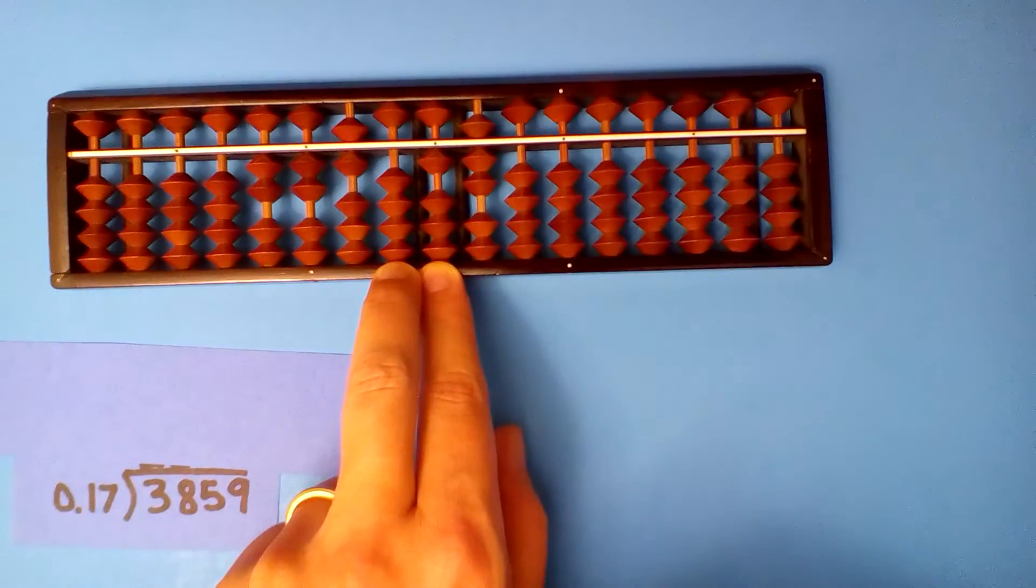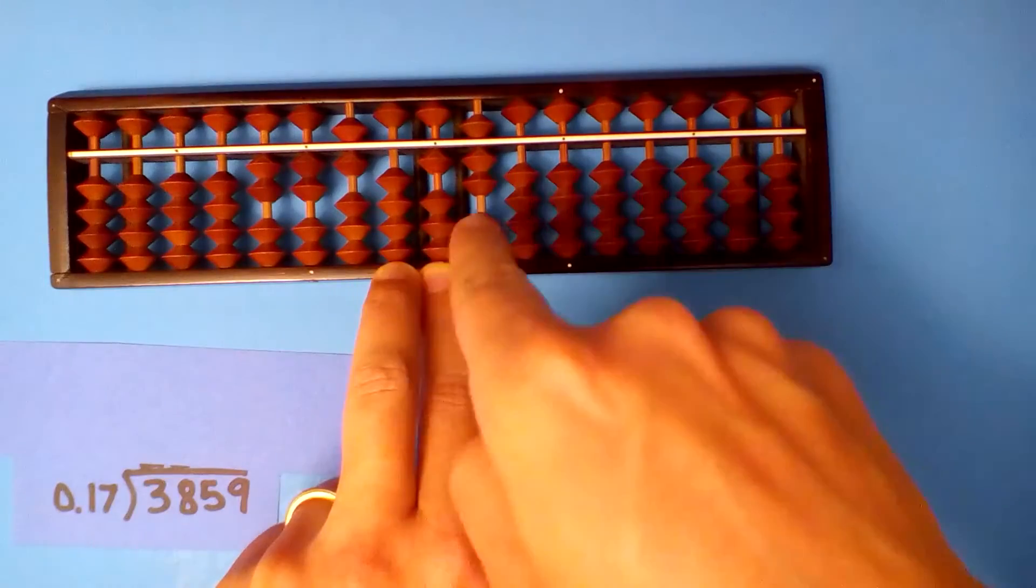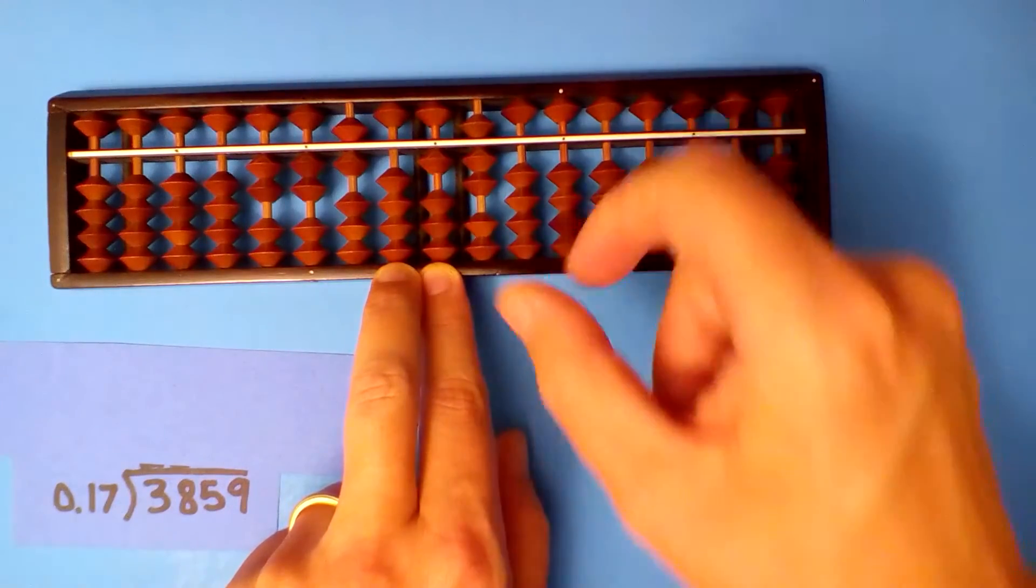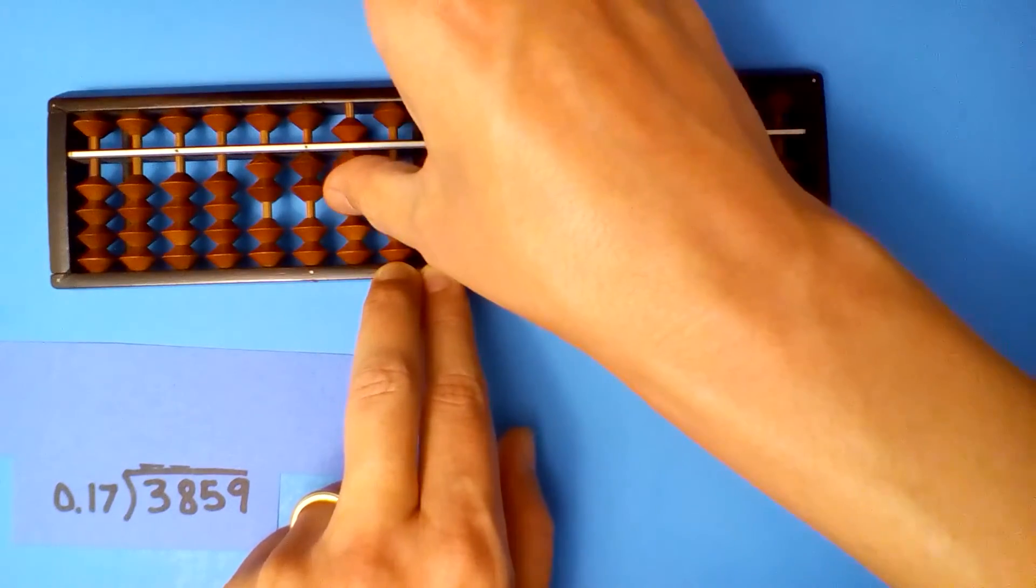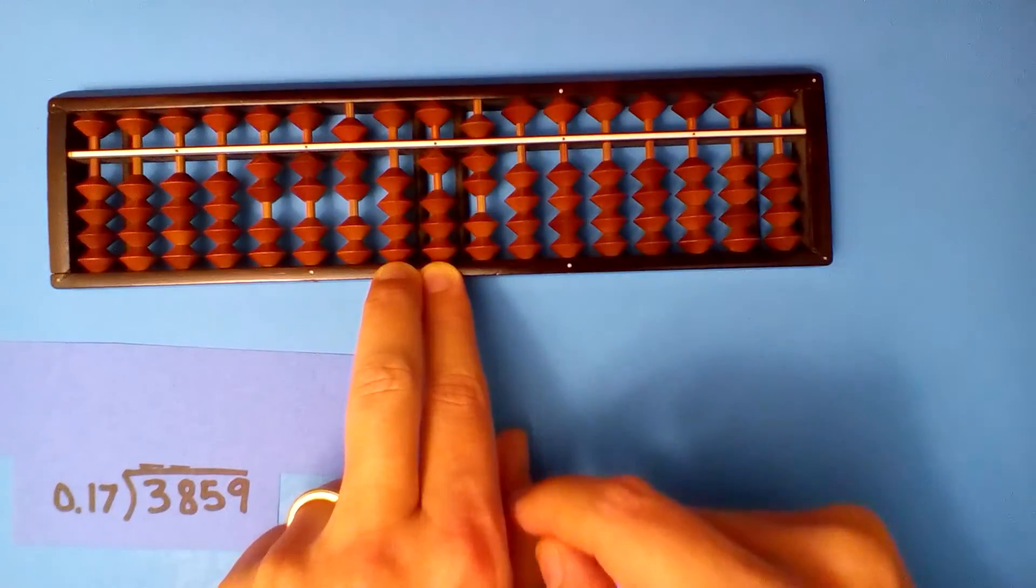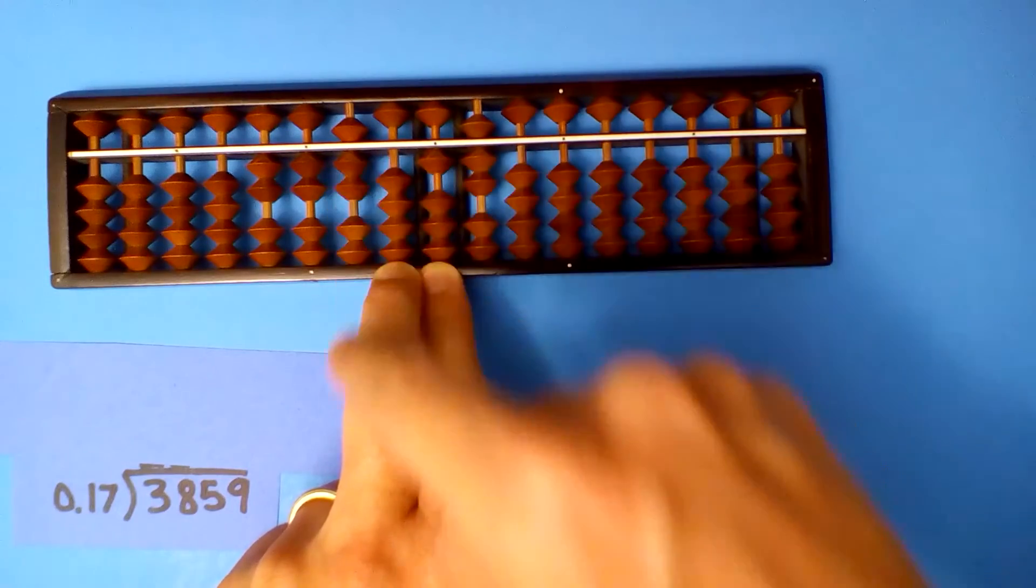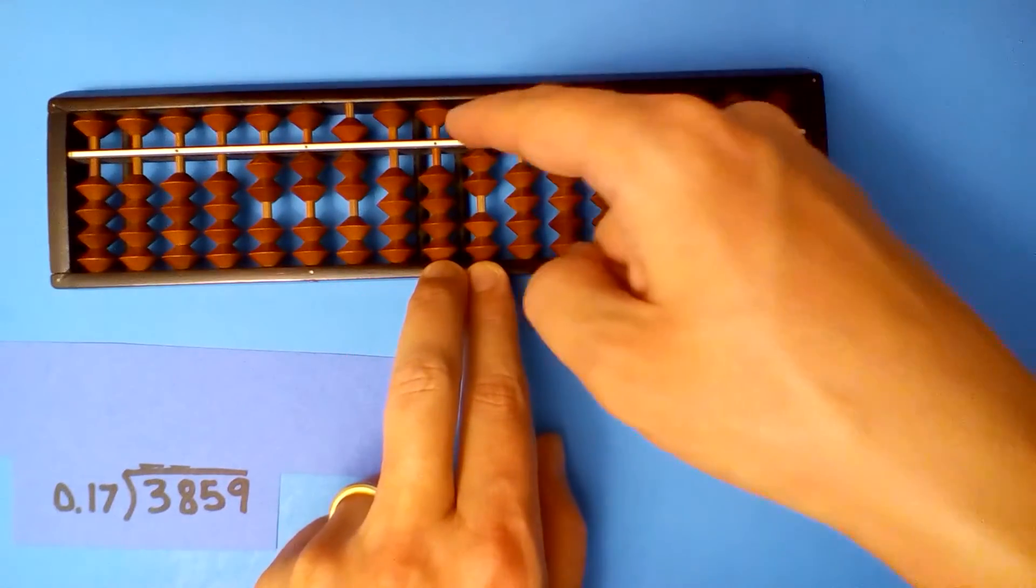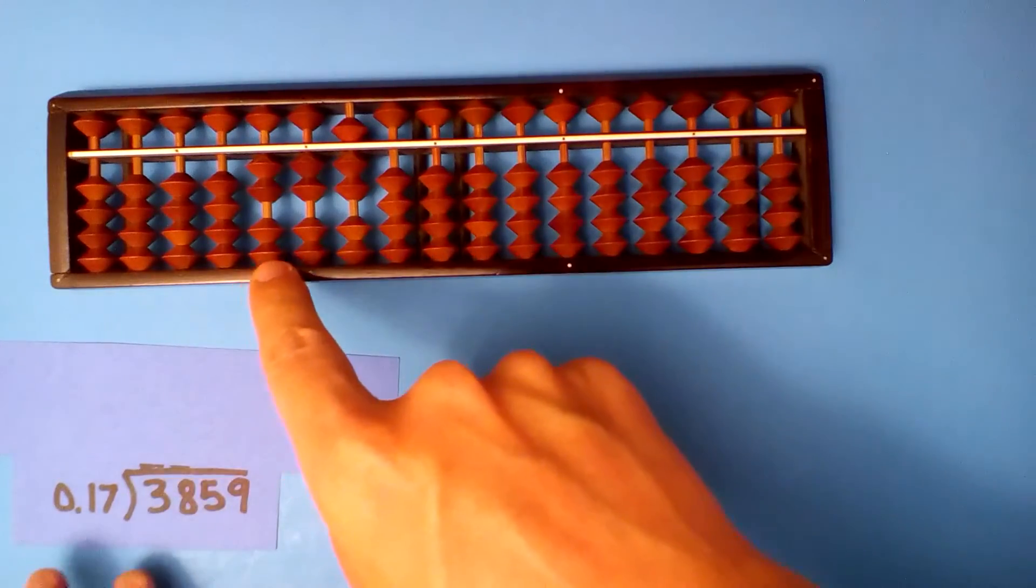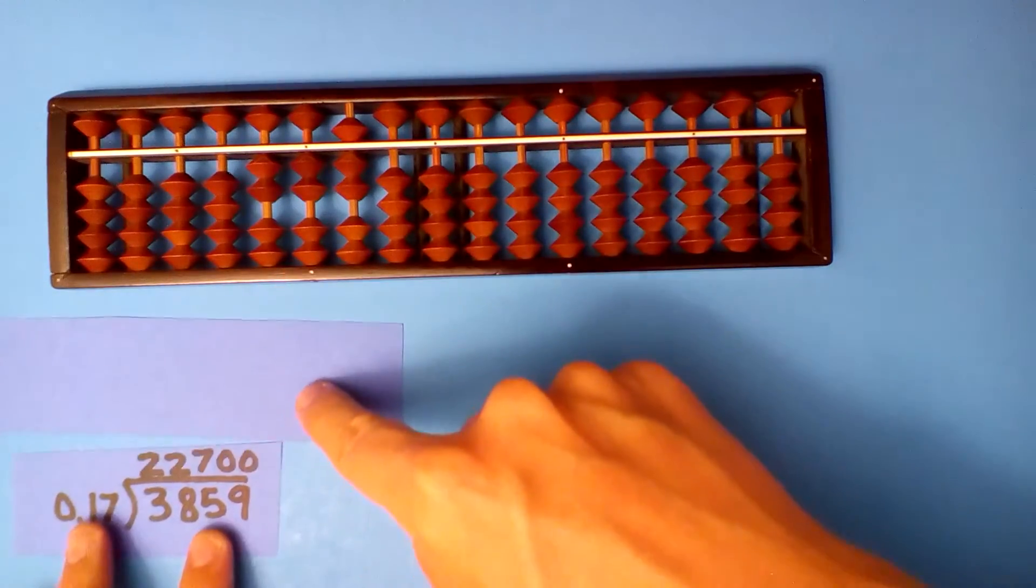1 goes into 1 once. Actually, it's 1.7 into 1.7, same as before. Even though I already put a number here, I can still put a 1 and go just like I would before. I just added 1. So 1 times 1 is 1, 1 times 7 is 7. Our quotient is 22,700.